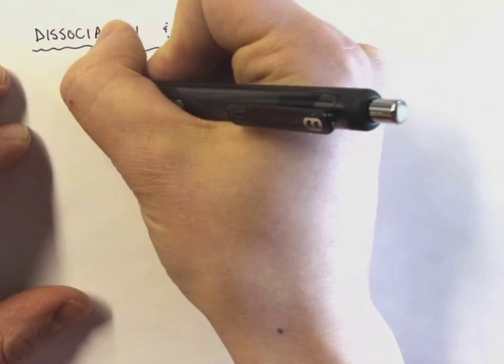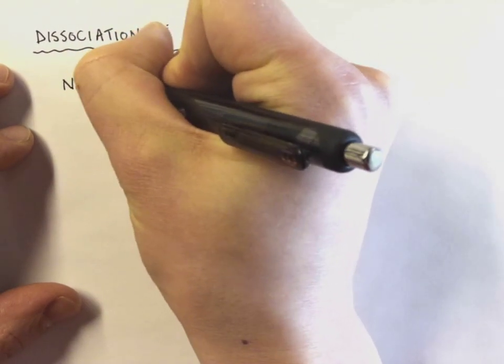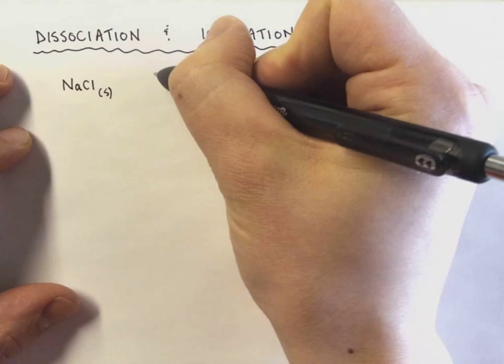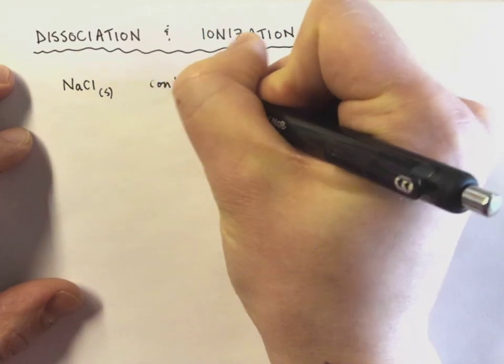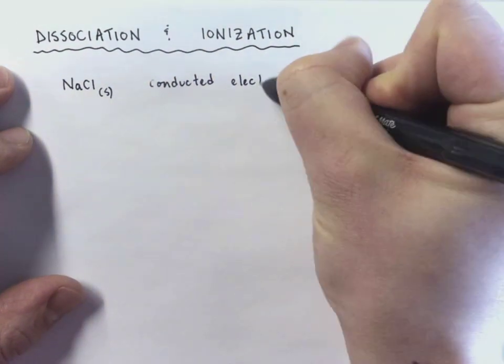But what he noticed with a lot of substances, take for example something like sodium chloride, what he noticed with a substance like sodium chloride was that it actually conducted electricity. So sodium chloride conducted electricity when it was dissolved in water.